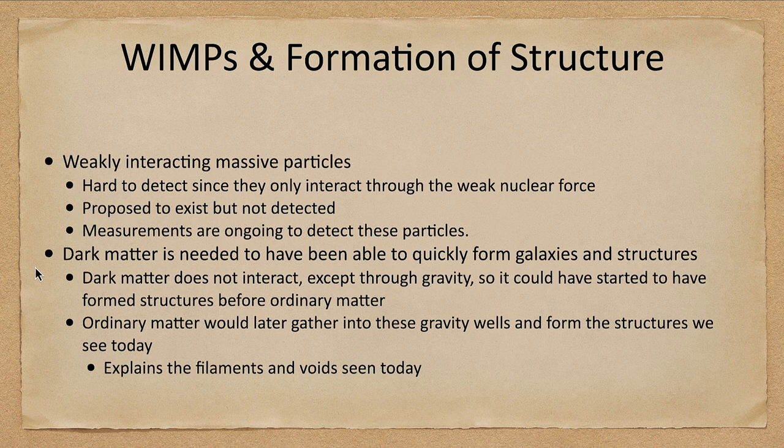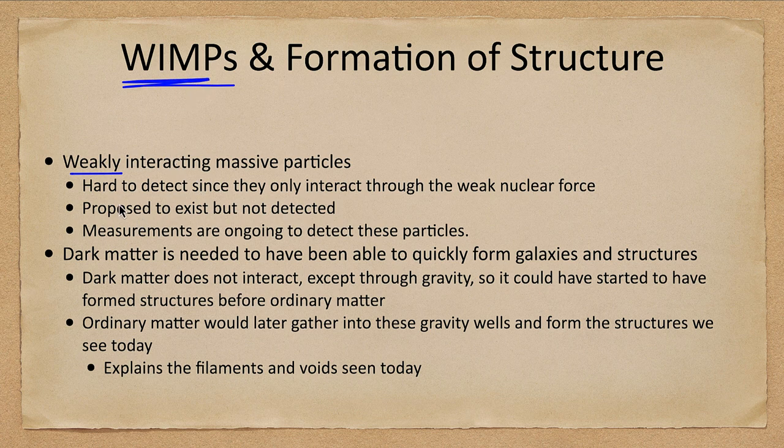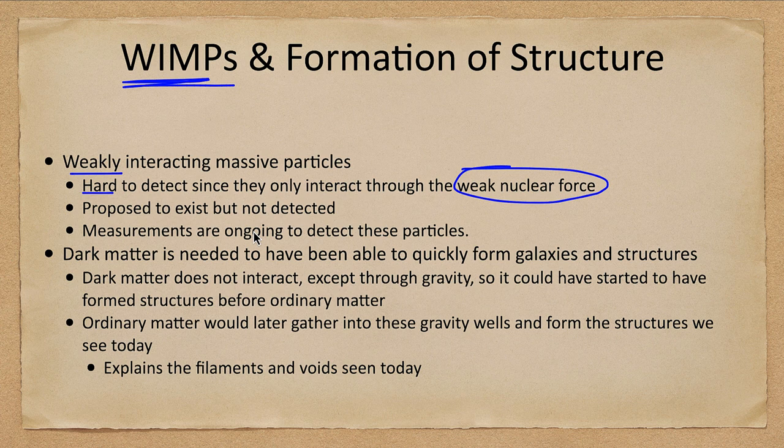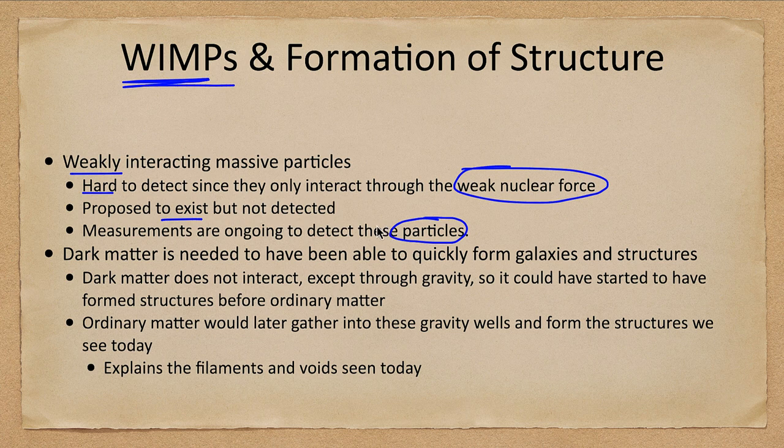So what is it? We looked at previously weakly interacting massive particles, or WIMPs. They're very hard to detect because they interact through the weak nuclear force. We don't see them otherwise, except through that and gravity. They don't emit any electromagnetic light that we can see. They've been proposed to exist, and we are still looking to detect some type of massive particle that exists out there.